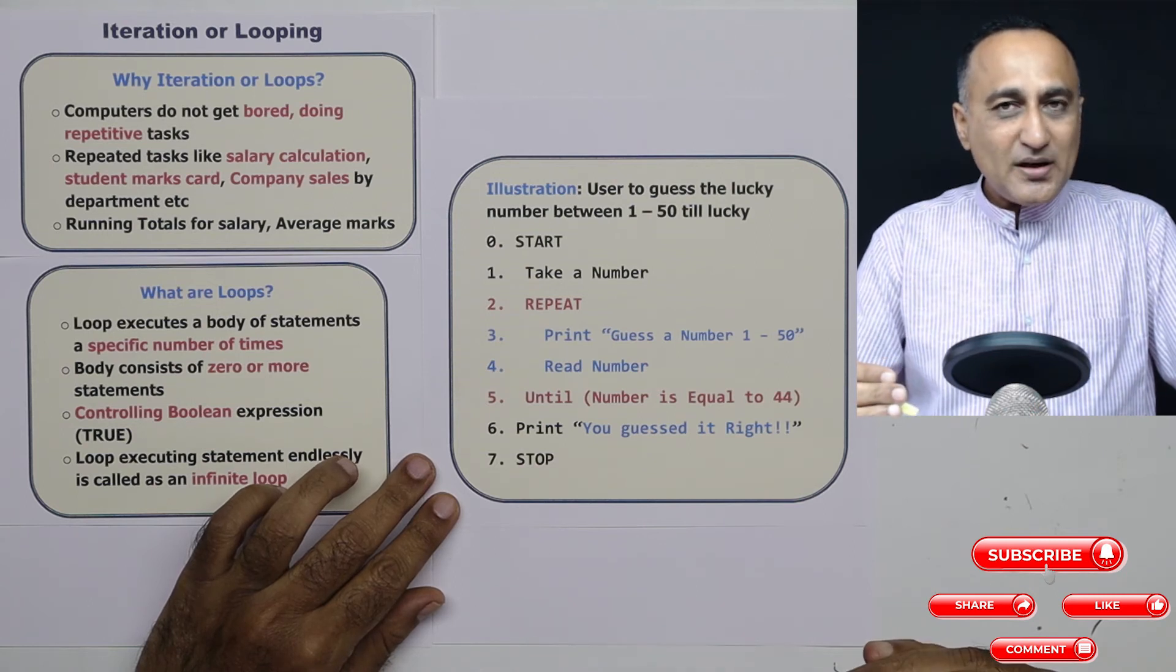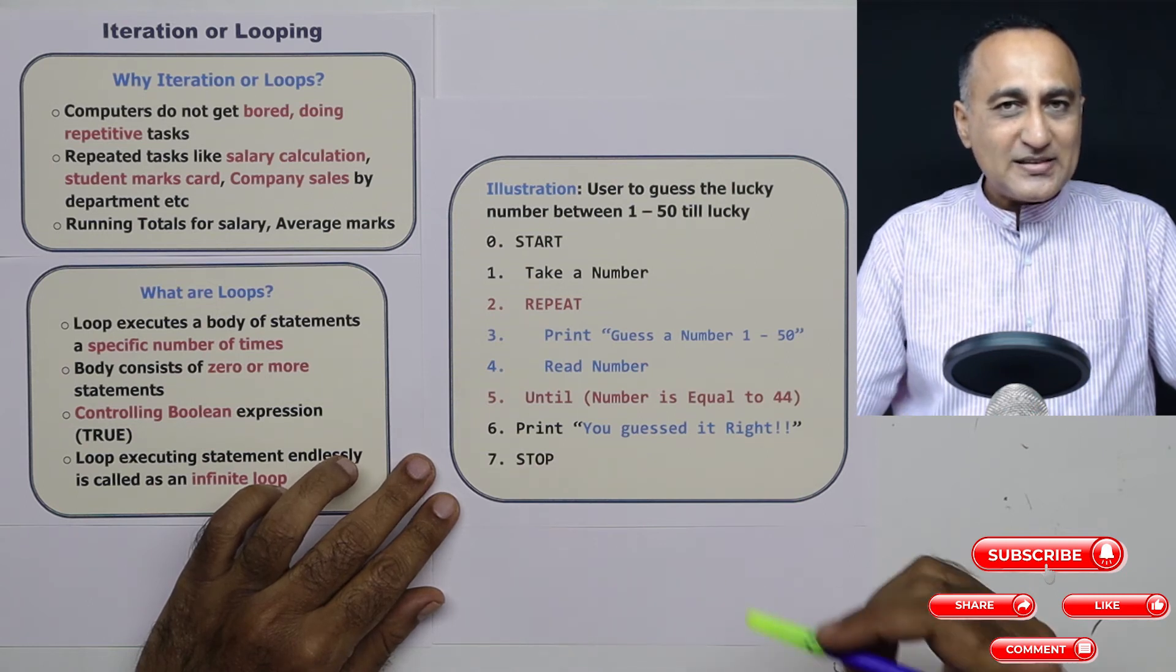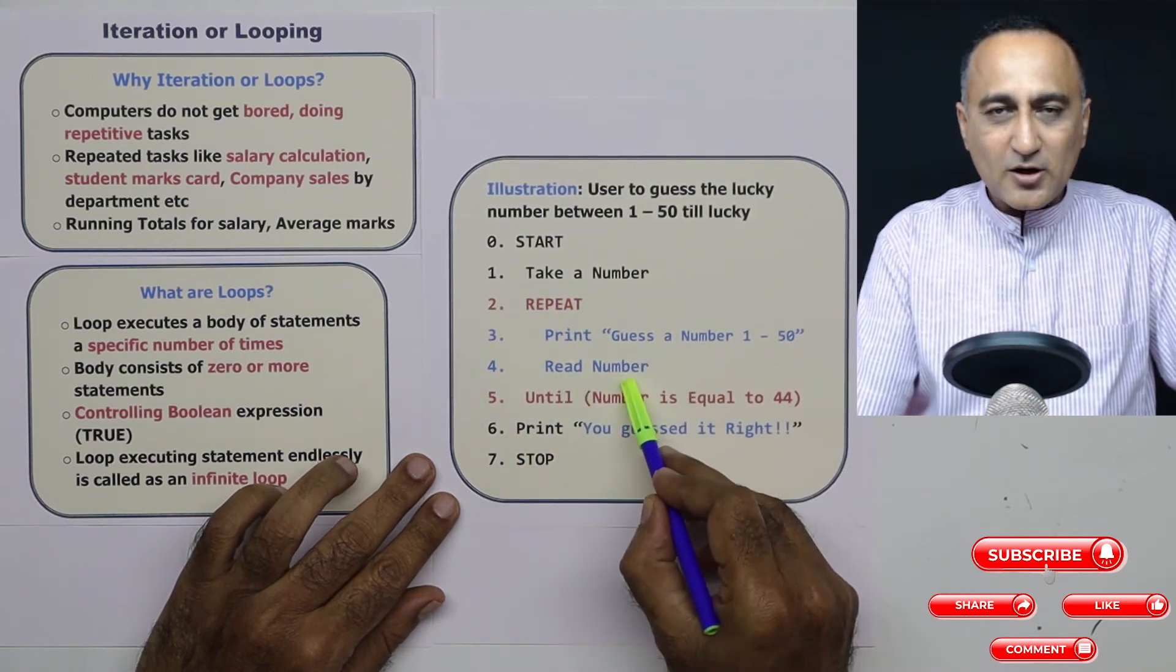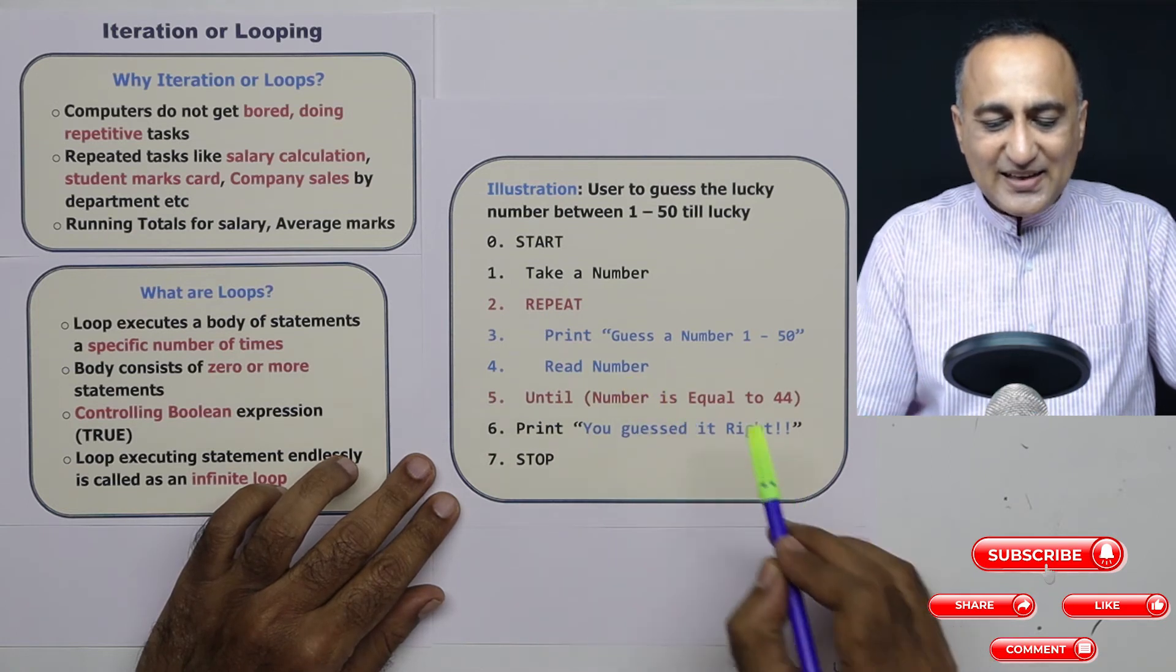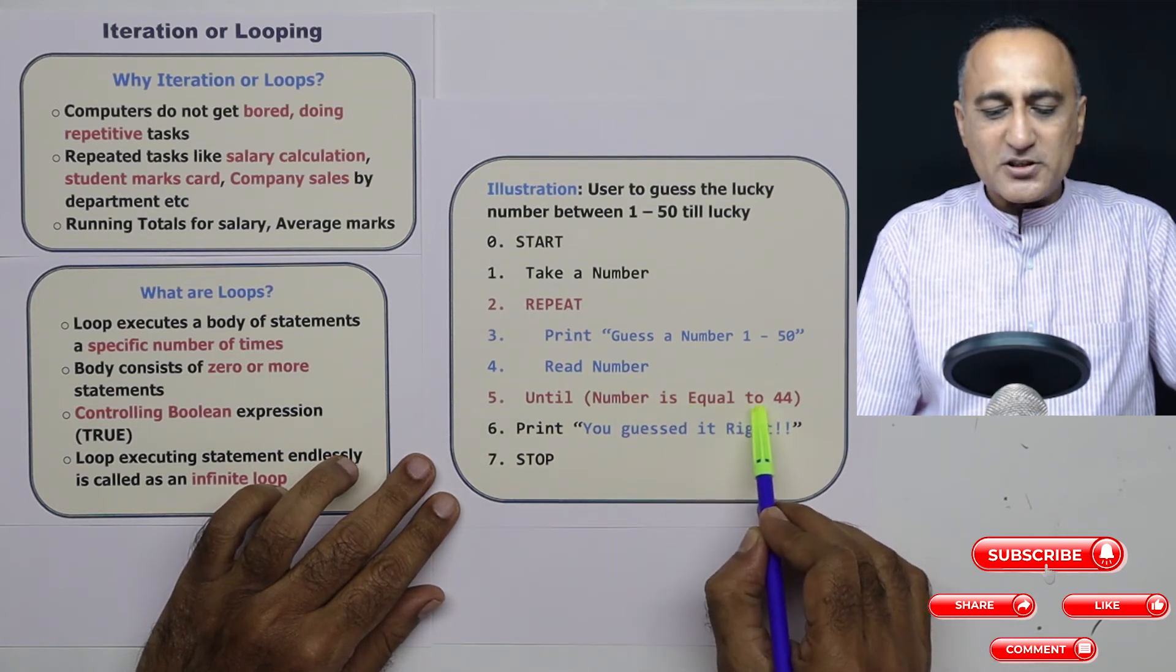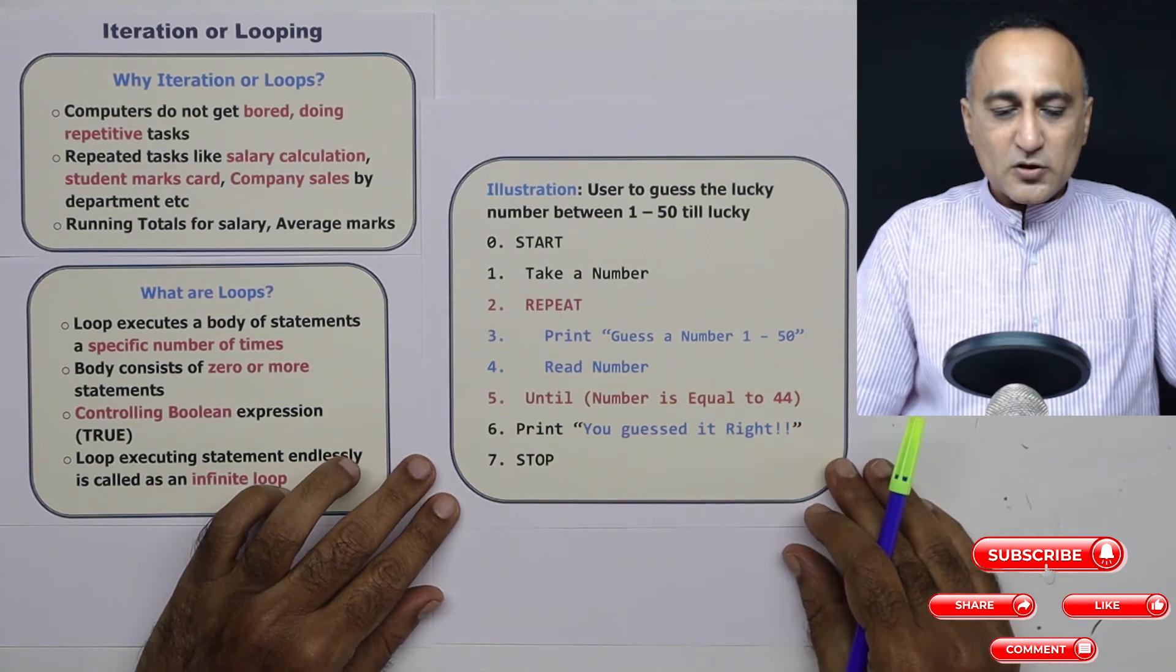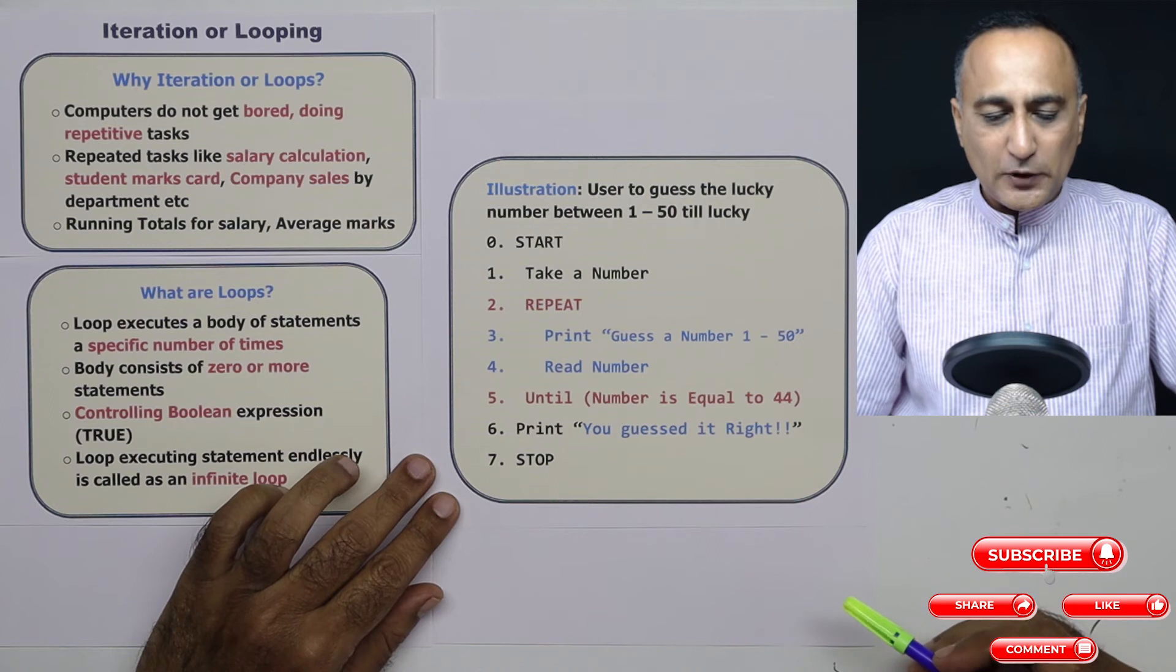The difference between other loops and repeat until is repeat until is going to execute this particular block of statements until the condition is false. The minute the user enters 44, it is going to stop. Let me explain to you different aspects of a loop.